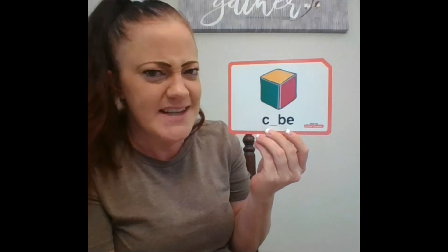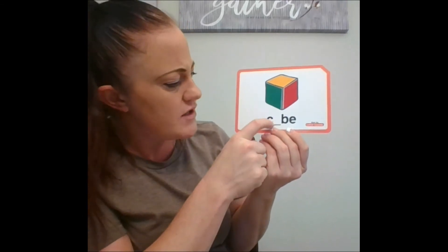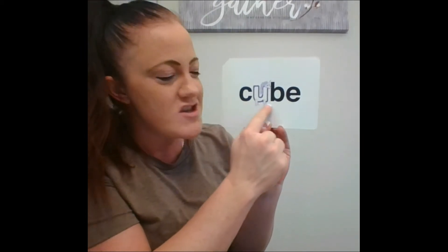All right, what do we got here? C-U-B. What's the missing letter? It's not the C, because we've got the C. C-U-B. U is the missing letter. There it is. C-U-B.